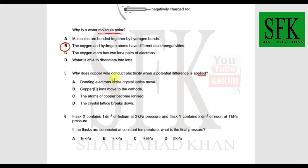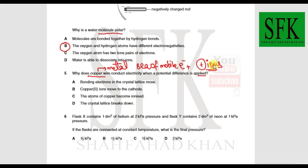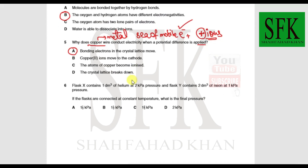MCQ 5: Why does copper wire conduct electricity when a potential difference is applied? Copper is a metal with metallic bonding — the association between a sea of delocalized mobile electrons and localized positive ions. The positive ions do not move; it is the delocalized electrons involved in metallic bonding that move to conduct electricity.